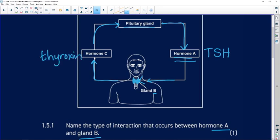And how did I know? I know that the pituitary gland produces a lot of controlling hormones, of which thyroid stimulating hormone is one. And I know that gland B is the thyroid wrapped around the larynx and it produces thyroxine.